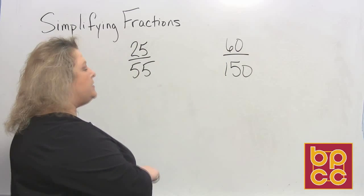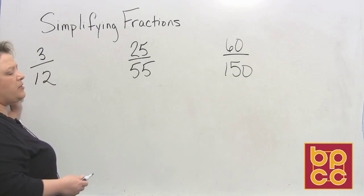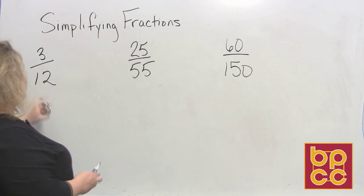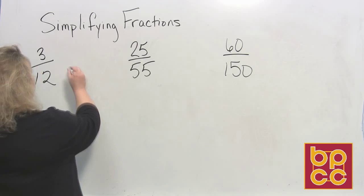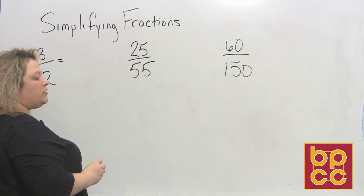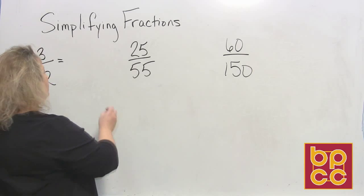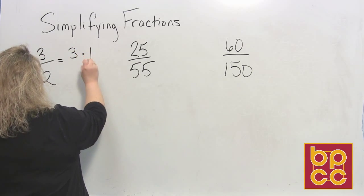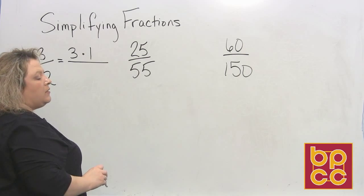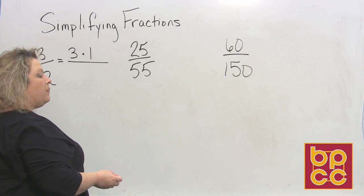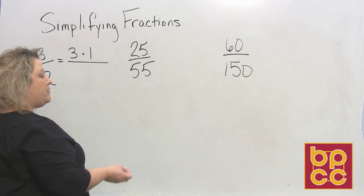We're going to start with an easy one. The first one we're going to start with is 3 over 12. Now 3, we said in one of the previous modules, is a prime number, which means the only thing that multiplies to give me 3 is 3 times 1. 12 is a composite number, but I know that 3 times 4 gives me 12.